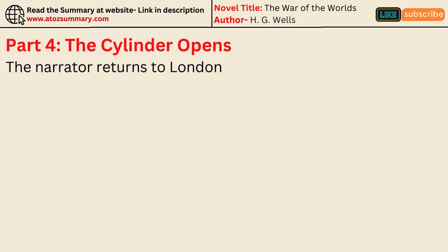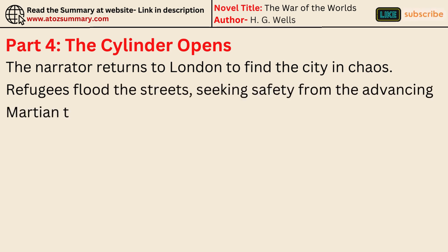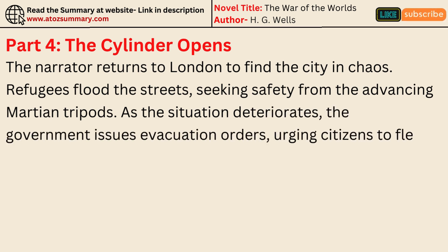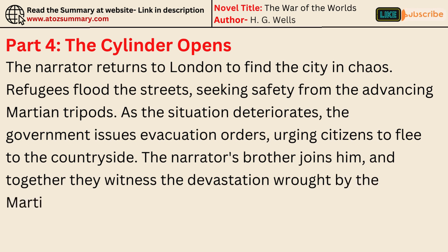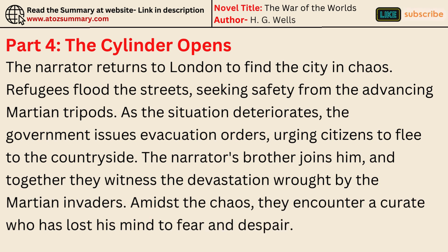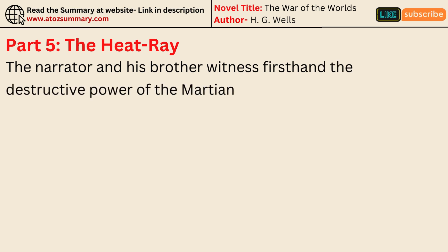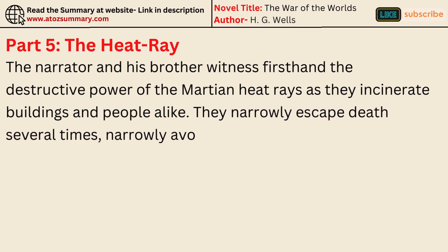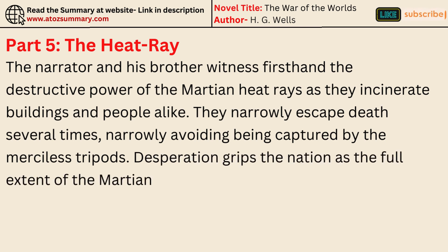The narrator returns to London to find the city in chaos. Refugees flood the streets, seeking safety from the advancing Martian tripods. As the situation deteriorates, the government issues evacuation orders, urging citizens to flee to the countryside. The narrator's brother joins him, and together they witness the devastation wrought by the Martian invaders. Amidst the chaos, they encounter a curate who has lost his mind to fear and despair. They narrowly escape death several times, avoiding capture by the merciless tripods. Desperation grips the nation as the full extent of the Martian threat becomes apparent.